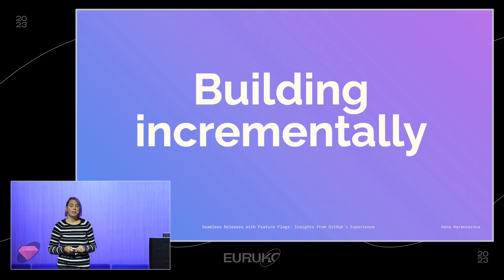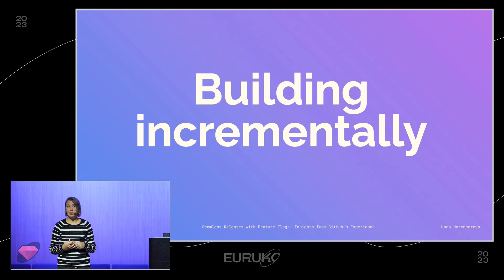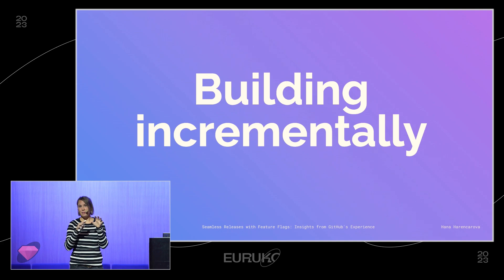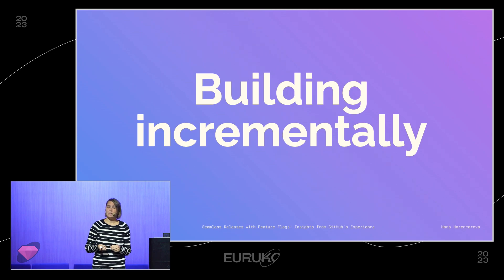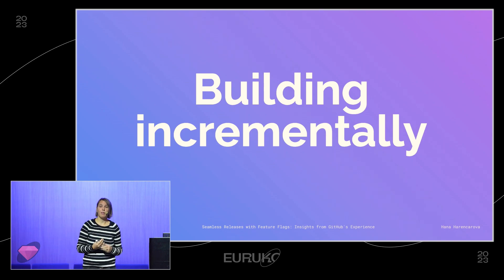Another huge advantage is shipping things incrementally, especially for big features. With a feature branch strategy you'd work on it over months. GitHub has over 1,000 developers and a large code base — after a couple of months you'd have two diverged branches, and merging is a lot of work. With feature flags, we ship features incrementally, which enables small PRs that are easy to review. We can also divide code that needs review just from our team, shipped faster, versus a different PR when touching files owned by other teams.